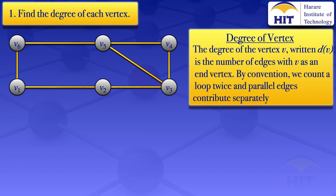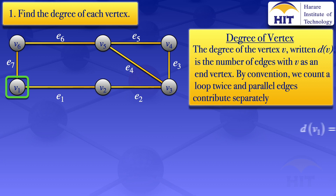I usually find it convenient to label the edges, so I'll call them e1, e2, e3, e4, e5, e6, and e7. These are just for reference. Looking at the vertex v1, we see that it is an end vertex for edges e1 and e7 — just two edges. Therefore, the degree of v1 is equal to 2.